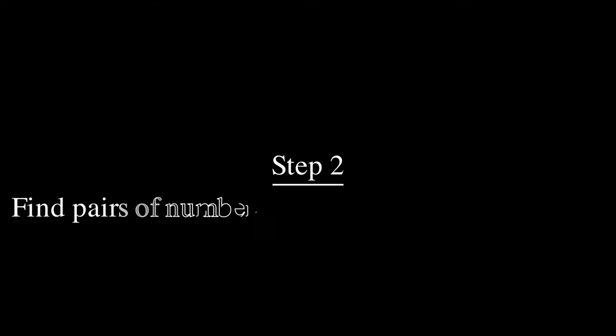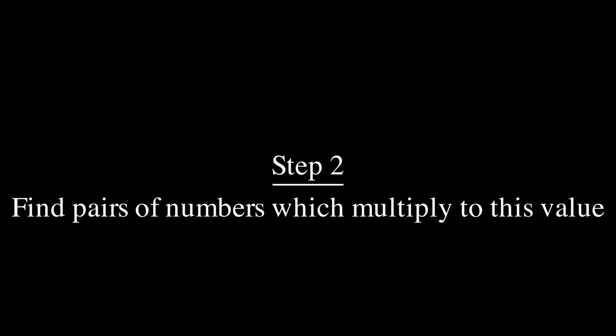Step two is to try to find all of the pairs which multiply to this number. Now it turns out you don't really need to find all of them but go ahead and write down as many numbers as you can that multiply to the magenta value for now. Pause the video and resume when you're ready to continue.